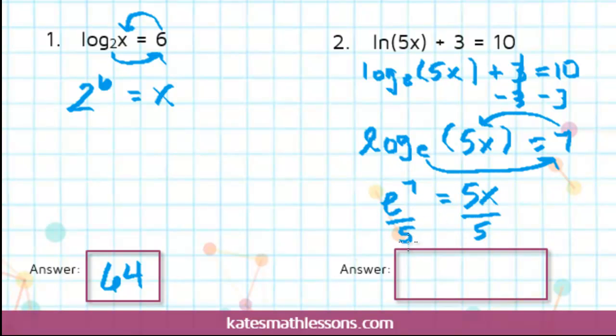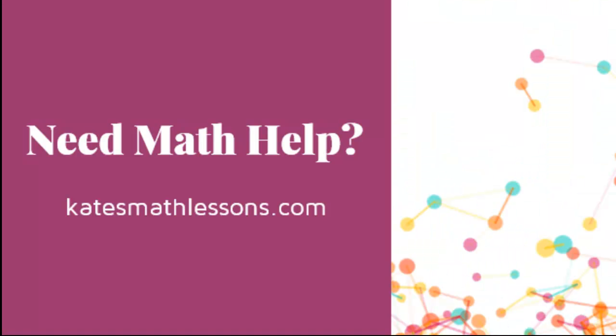So if you wanted to give an exact answer, you could leave it like that and just write E to the seventh over 5. That would be an acceptable answer. Or if you're asked to round it, you would plug in 2.718 in for E, do that to the seventh power, divide by 5, and that comes out to about 219.17. So either of these answers would be acceptable.